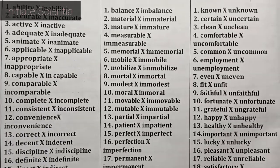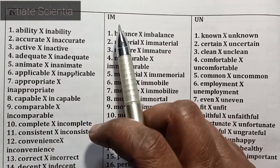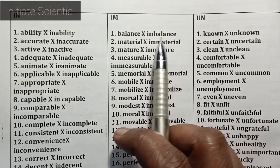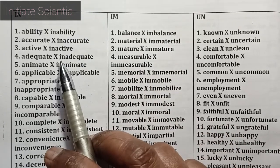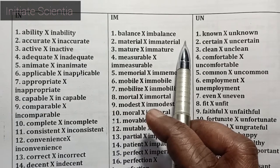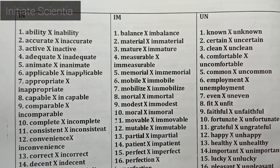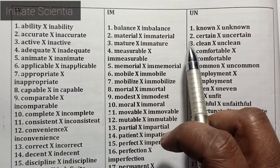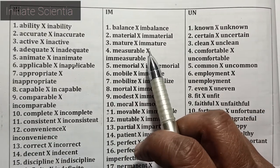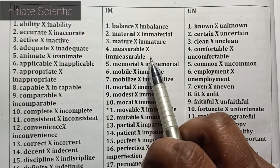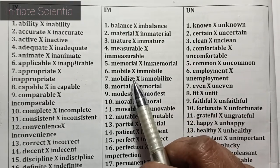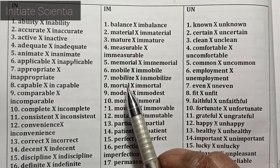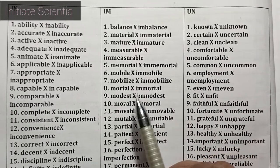Now words that use the prefix IM for the opposite term: balance – imbalance. Note: you should write IM, not I AM. For these words you have to use IM: material – immaterial, mature – immature, measurable – immeasurable, memorial – immemorial, mobile – immobile, mobilize – immobilize.